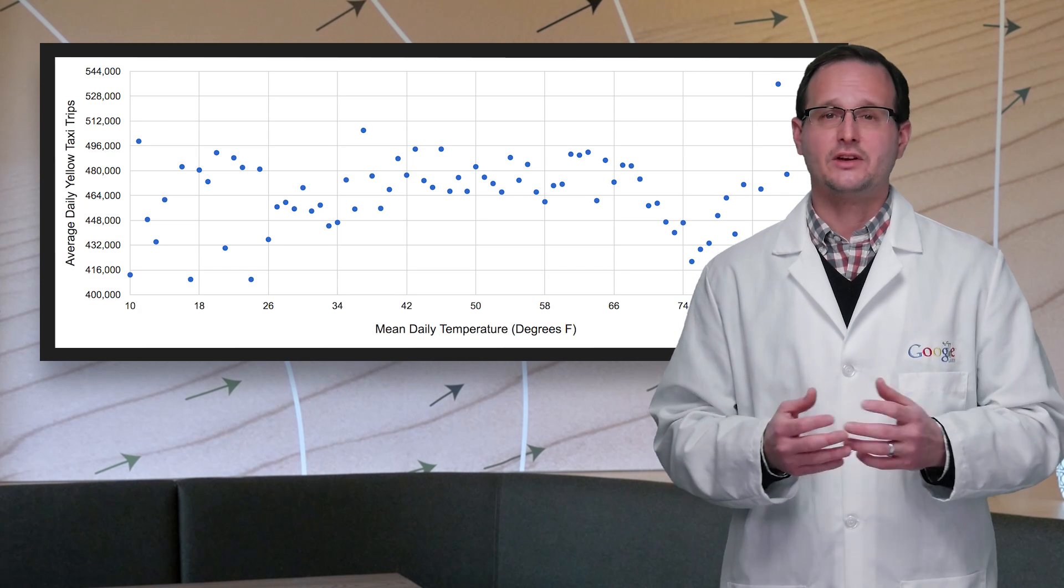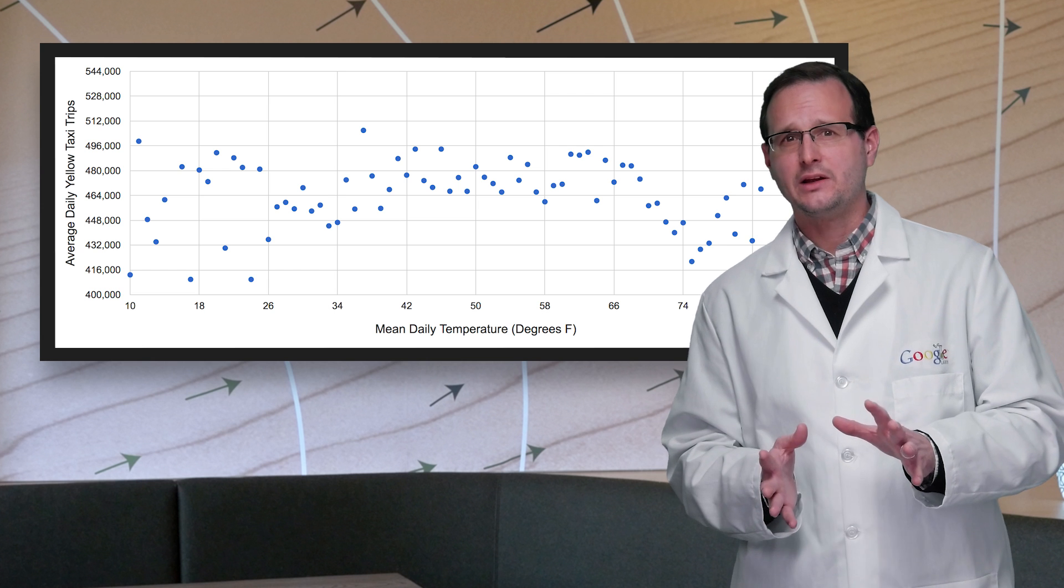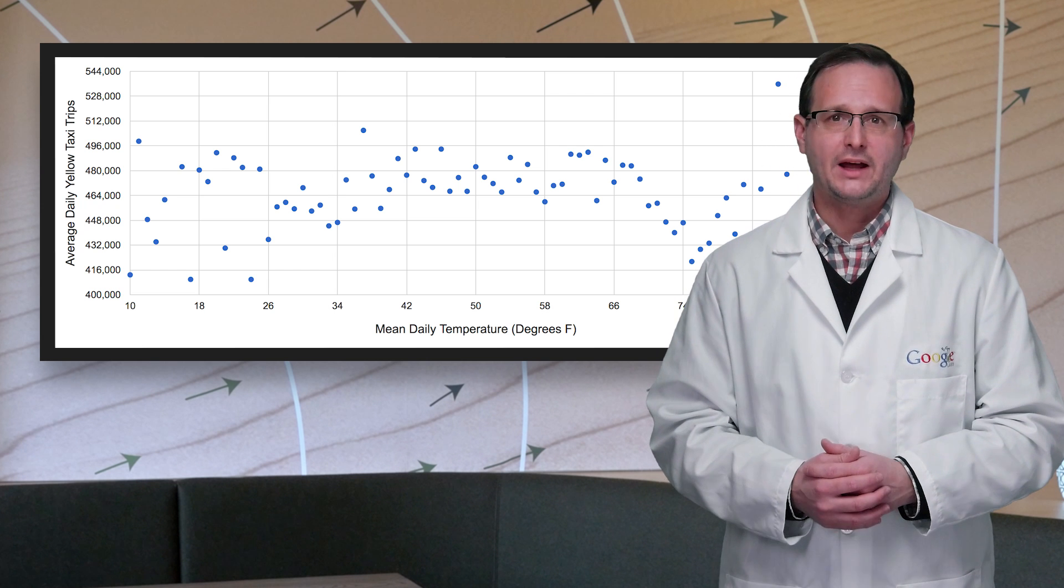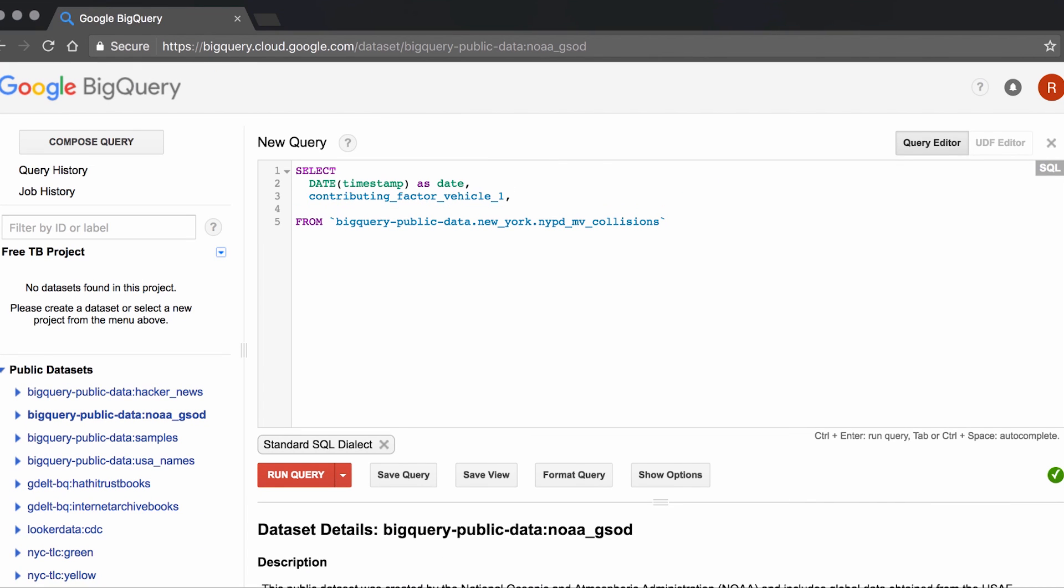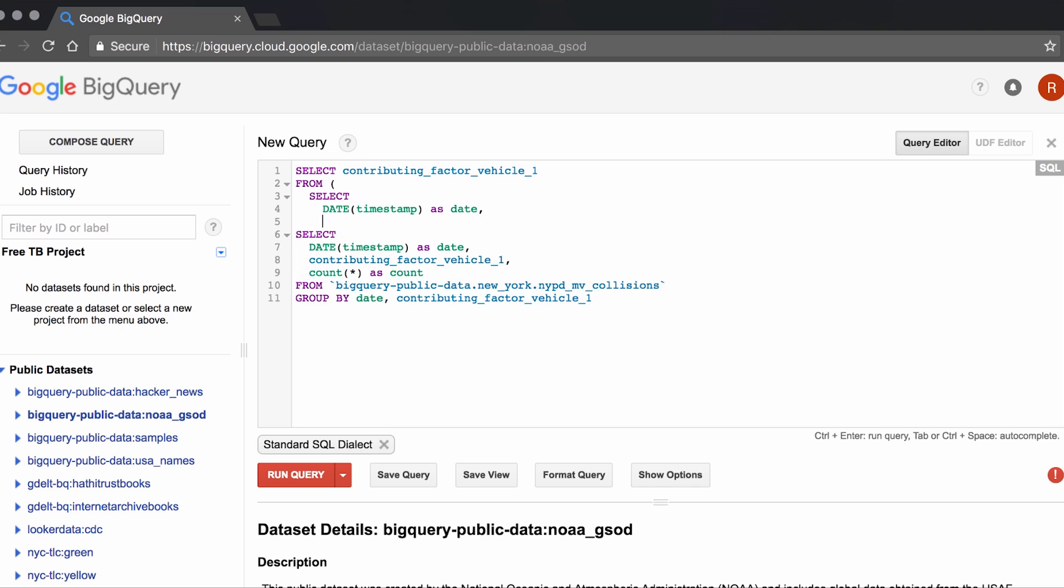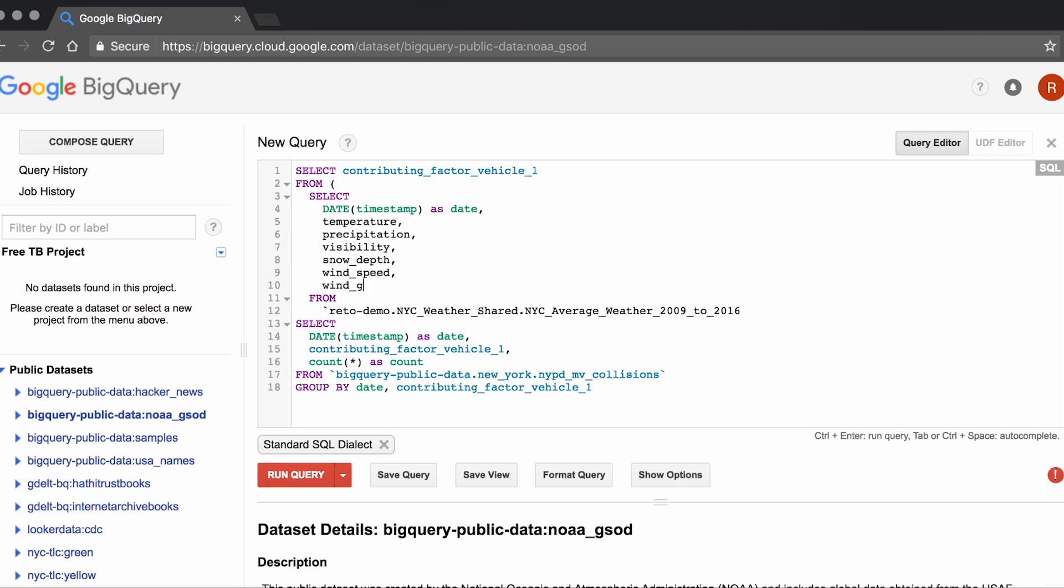We all know that correlation doesn't imply causation, but maybe if we're just looking for interesting patterns, we can use correlations as a way of finding them. Calculating correlation is a pain in that it's hard. And graphing every possibility would take forever. But thankfully, BigQuery includes the core function to do all the hard work for us.